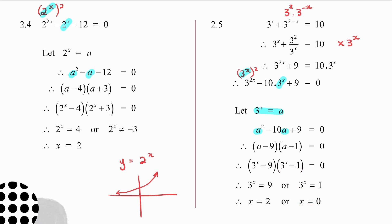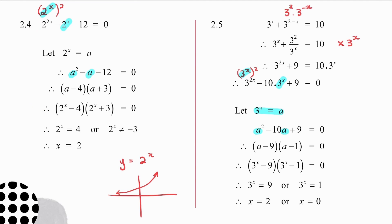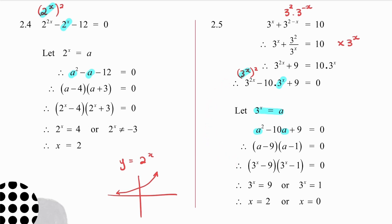For these two examples — if you can go from the original and factorize straight as a trinomial, that's brilliant. If not, let something equal a and then work with it that way.